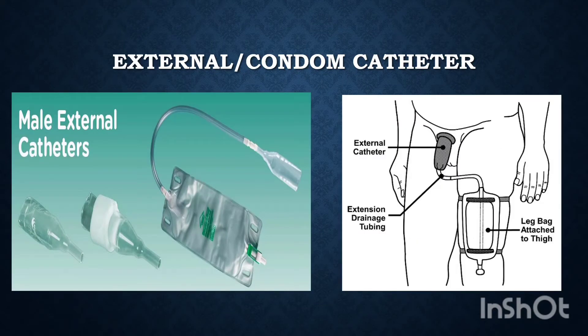The condom catheter is an external catheter used on males. It is applied over the penis and attached to drainage tubing to the leg. It collects urine in the incontinent or unconscious patient who has complete and spontaneous bladder emptying.